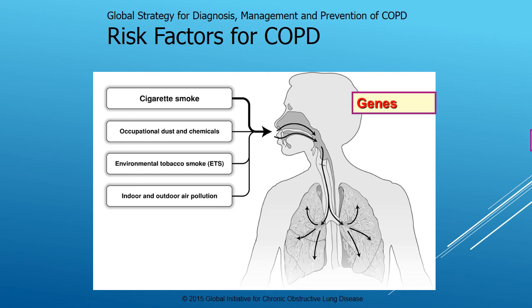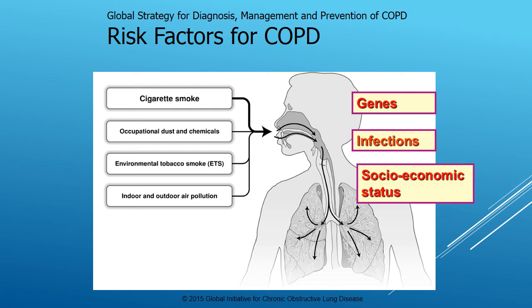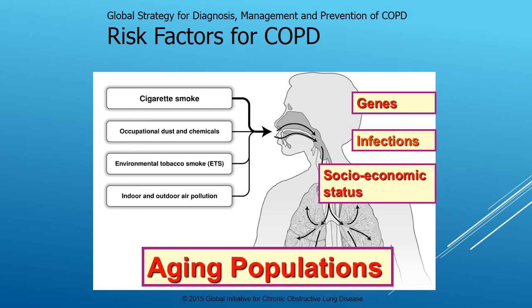There are a lot of risk factors for COPD. Cigarette smoking is the number one, but genes also play a part — we talked about alpha-1 antitrypsin and how COPD can sometimes run in families. Infections in early childhood or premature birth can affect COPD risk due to decreased lung development. Socioeconomic status plays a part as well, largely through occupational dust and chemicals, indoor and outdoor air pollution, and environmental tobacco smoke exposure. All of those play into the risk factors for COPD.